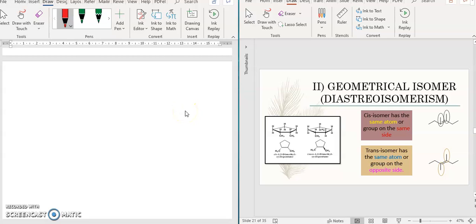Hello guys, we continue with the next subtopic, stereoisomerism. Previously I already mentioned that stereoisomerism consists of two subtopics: geometrical isomer and optical isomer.